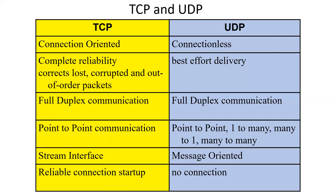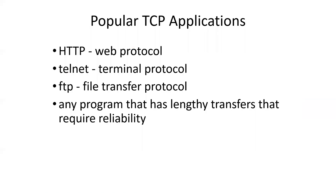TCP is a stream interface — you give it bytes and it streams them all together, handling packetization transparently. With UDP, you give it a packet and it sends the packet. TCP is very popular for HTTP and HTTPS — anytime you want reliable delivery. Telnet and FTP also use TCP. UDP is used for domain name server requests because they're short — you send one packet, and if you don't hear back in a few milliseconds, you send it again. The DNS packet has a checksum to verify correctness.